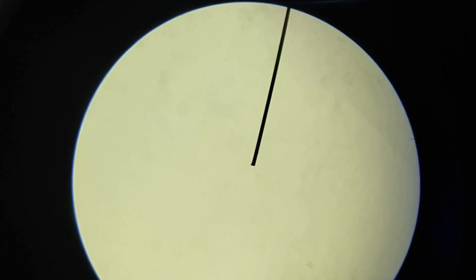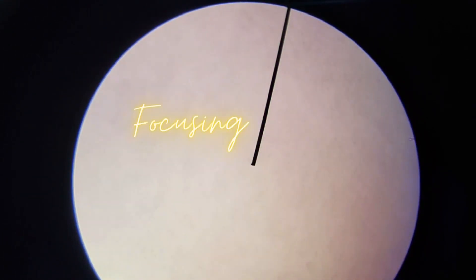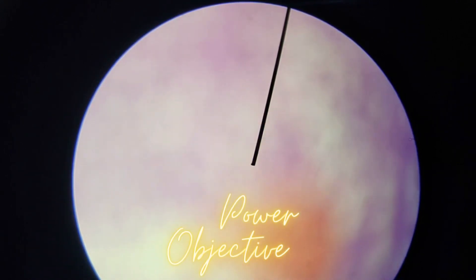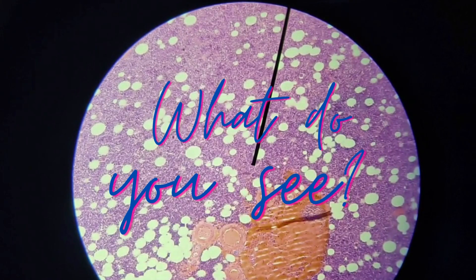I'm going to use the coarse adjustment knob. I'm making the stage go up toward the low power objective, and as you can see, an image is going to show up, such as this.